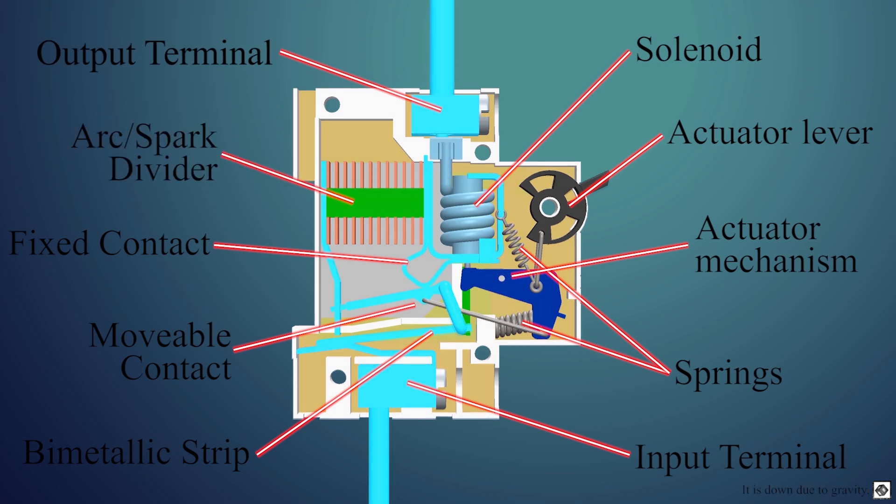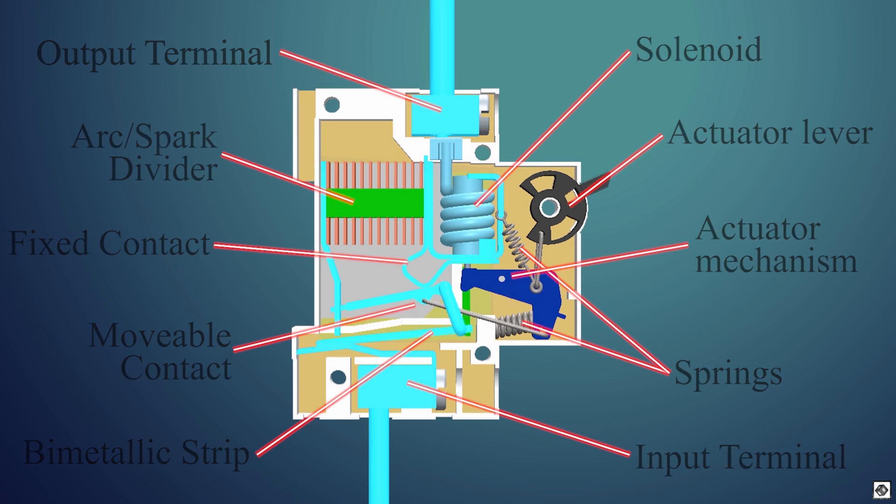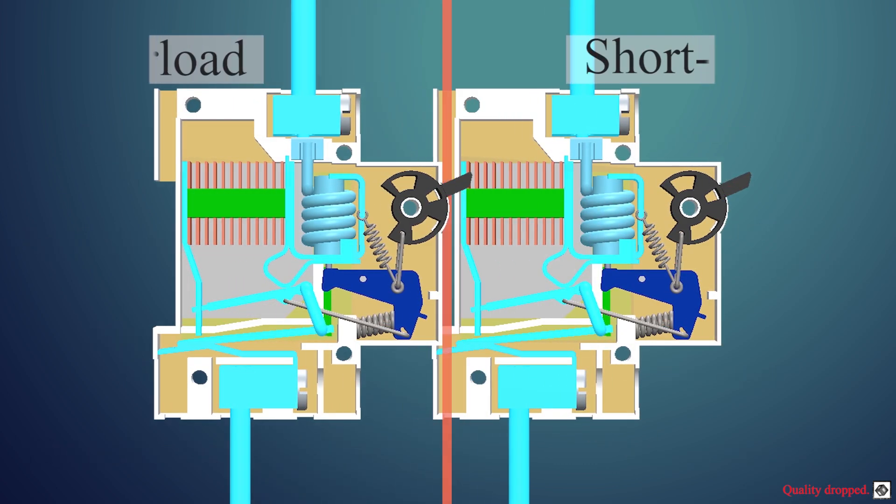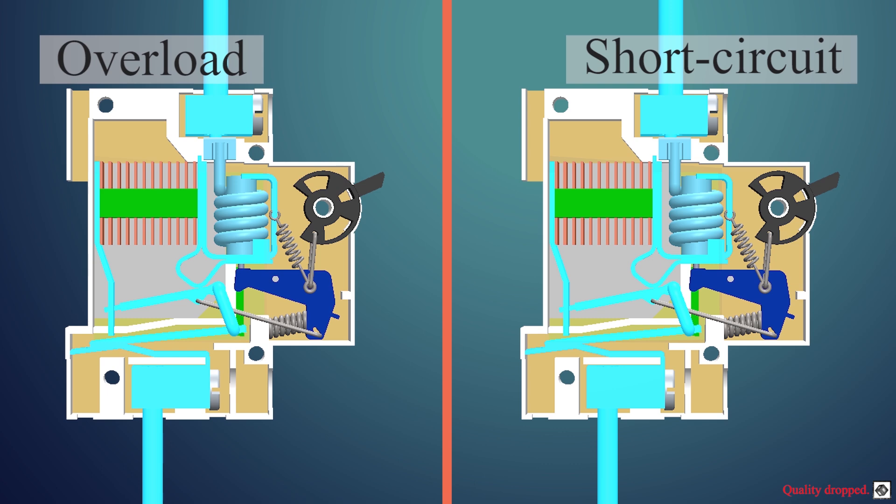There is also an arc or spark divider, which extinguishes the spark generated while separating the contacts. As these MCBs are used for protection against overload and short circuit, let us look at both cases.